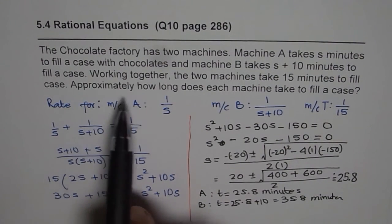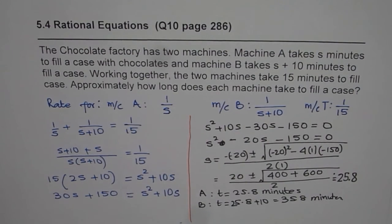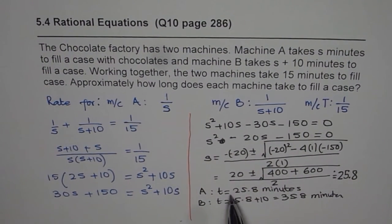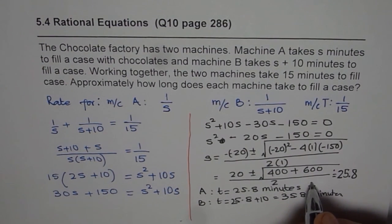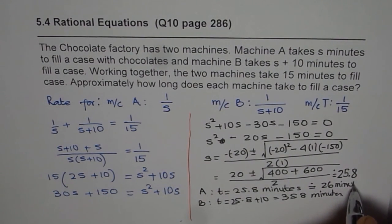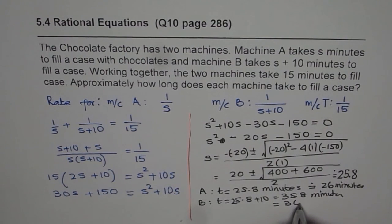So approximately how long does each machine take to fill? So that is approximately you can write 26 minutes and 36 minutes. So approximately let's write this as 26 minutes for A and for B, it is 36 minutes.